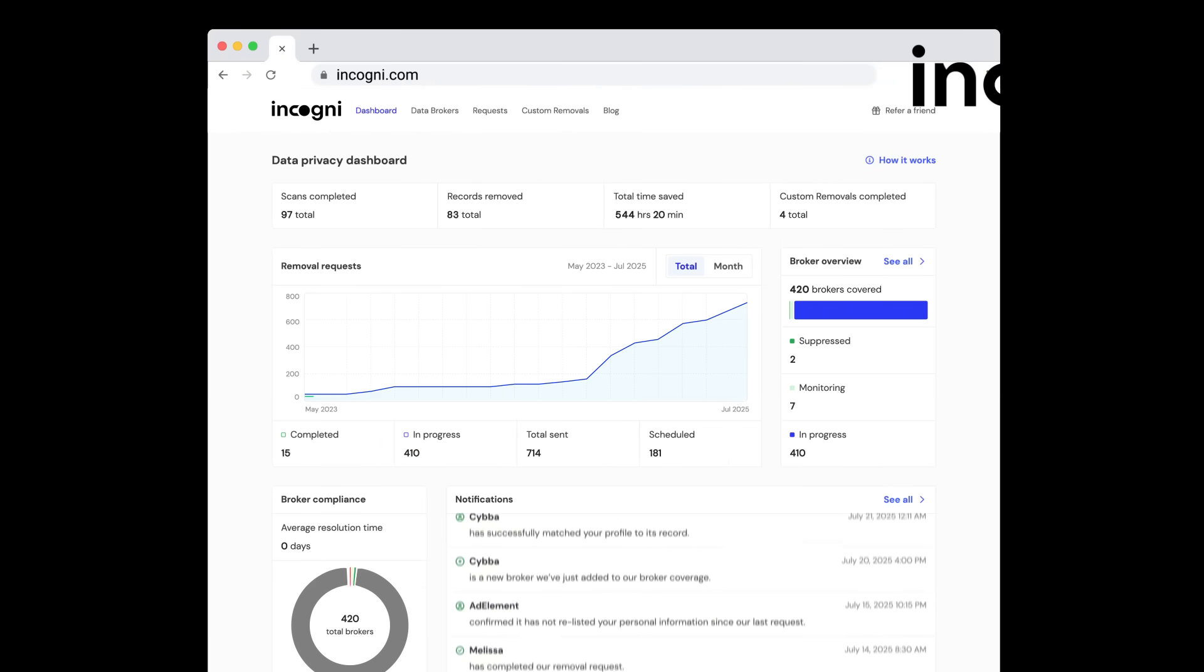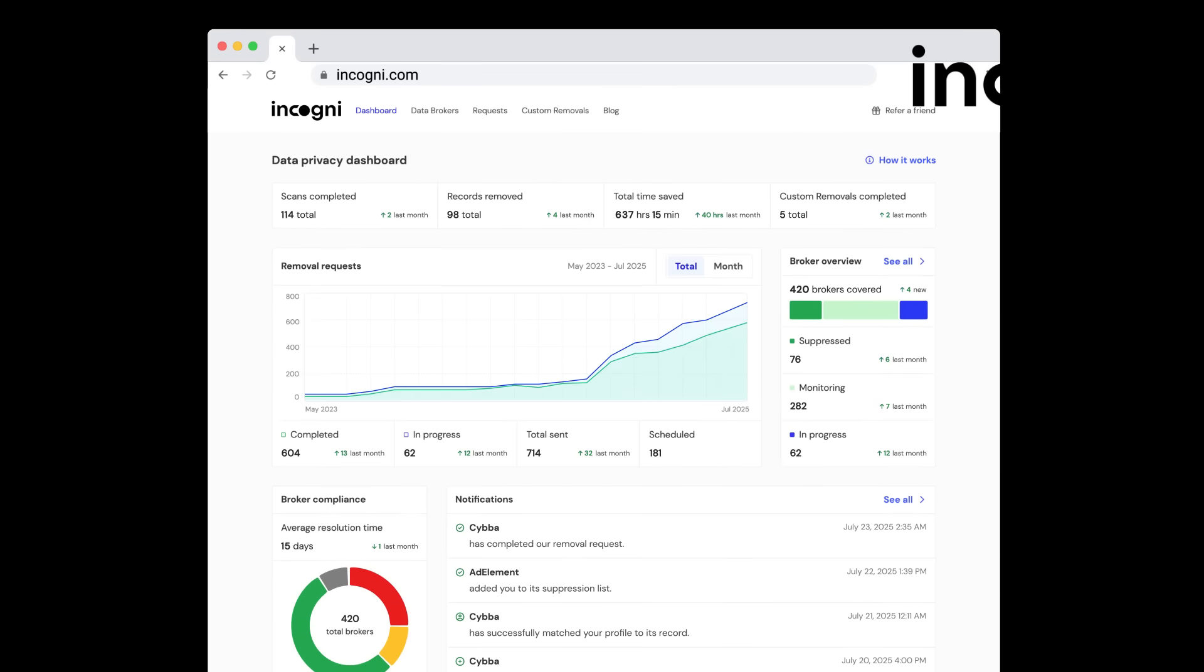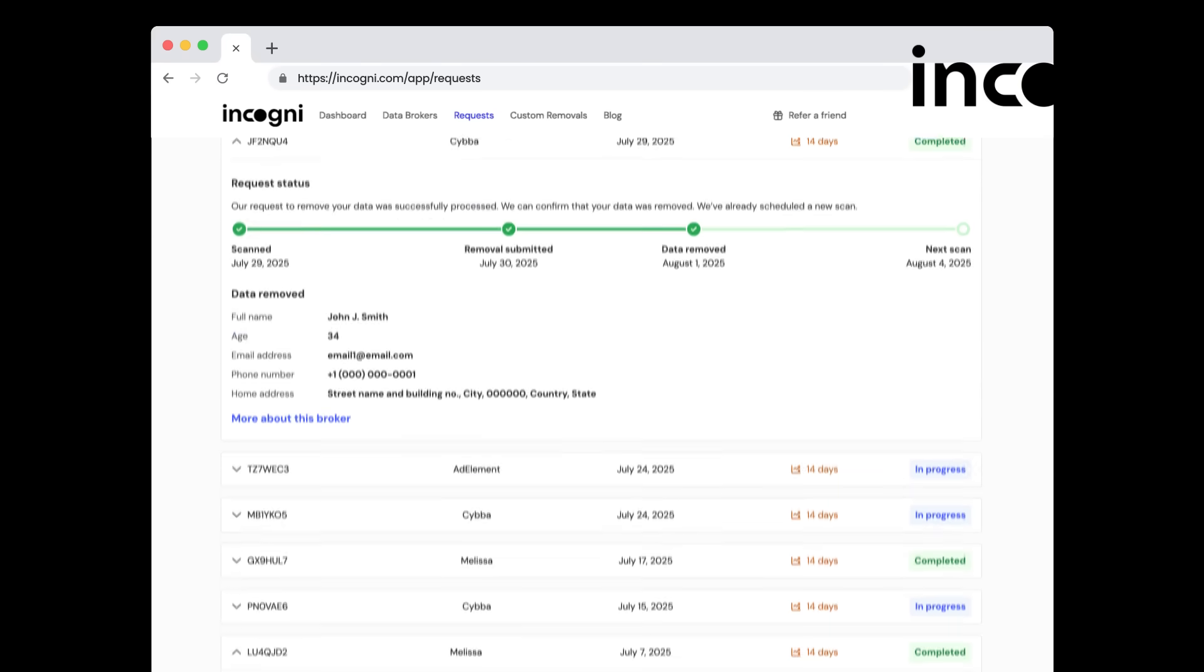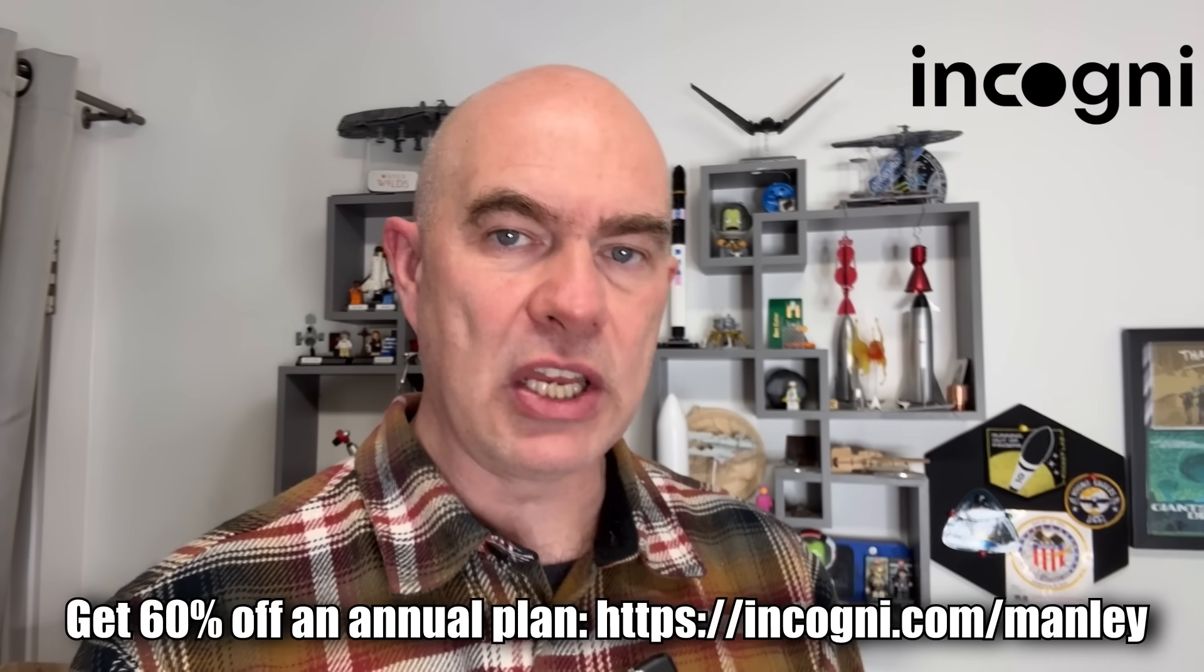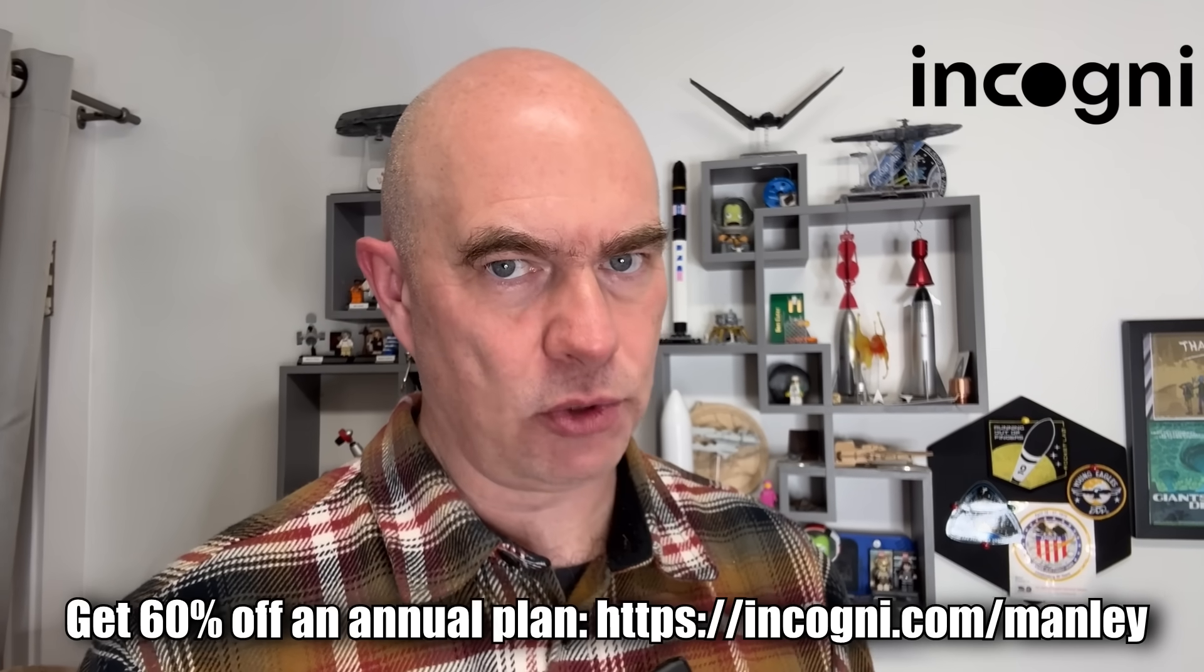Once you sign up and give them your details, they will start working for you, identifying matching records around the internet and requesting the takedowns. On an ongoing basis, they will continue to guard your privacy, sending new takedown requests as more data appears in the wild. Instead of having to phone hundreds of providers yourself, you can just follow the progress on their UI, which shows you how many requests have been sent, how many are cleared, and how many are still being worked on. It is a much better use of your time or your family's because they do offer a family plan that covers up to four additional members under one account. Take back your personal data with Incogni. Use code MANLY at the link in the description to get 60% off the annual plan.